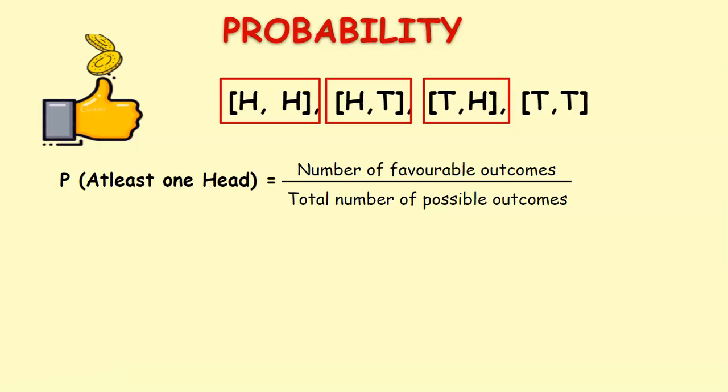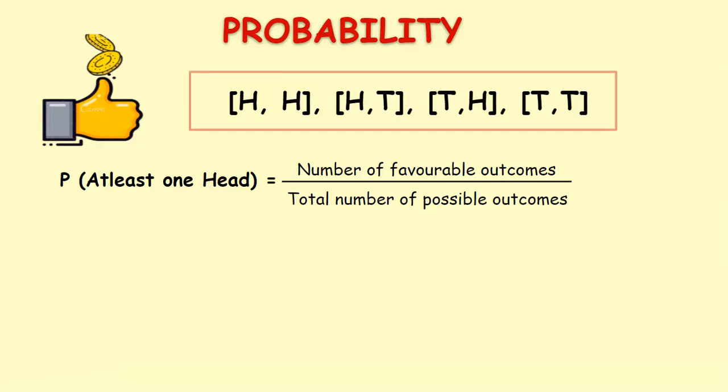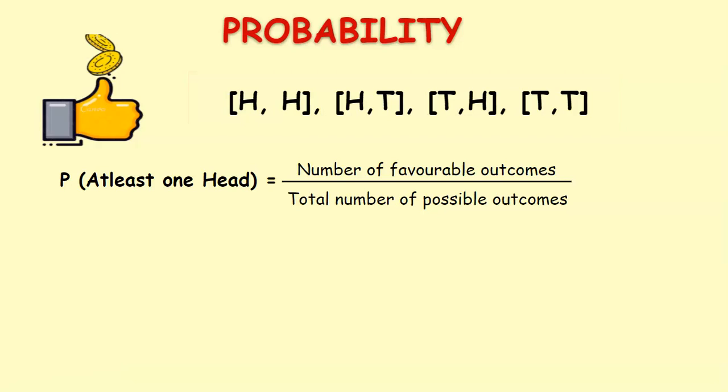Therefore our number of favorable outcomes are three by the total number of possible outcomes four. Therefore probability of at least one head is three by four.